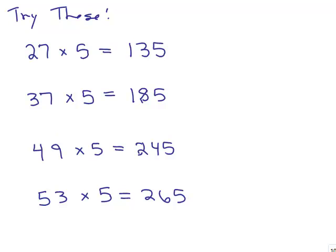The other way you could do it is if you don't want to take half of the number first, you could multiply by 10 and then take half. So if you have 27 times 5, you can multiply by 10 first, and then divide by 2, and you'll still get 135. 37 times 5, you can multiply by 10 first, and then divide by 2. If that's easier for you, you could do it that way.